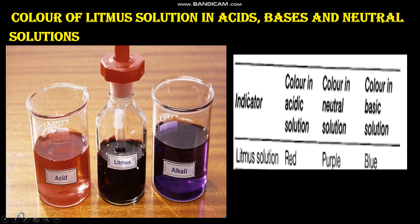First, let us see the color of litmus solution in acidic, basic, and neutral solutions. In a neutral solution, litmus solution is purple. In an acidic solution it turns red, and in a basic solution it turns blue. Note: alkalis are bases that are soluble in water.